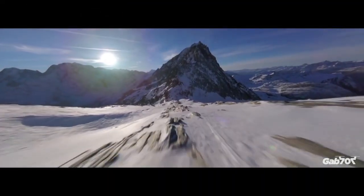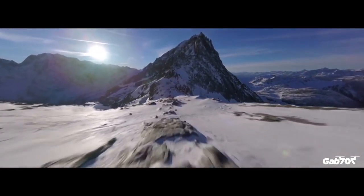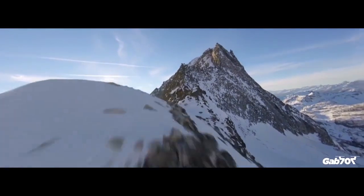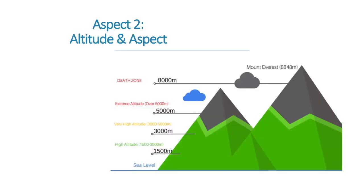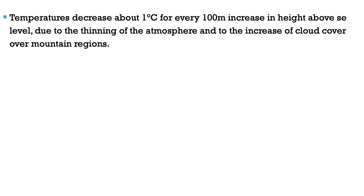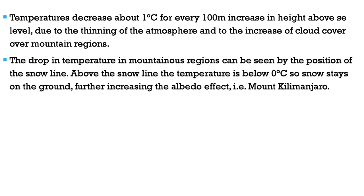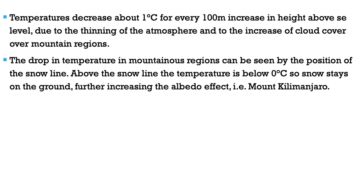The second aspect is altitude and aspect. Altitude is height above sea level, and aspect is the direction in which a slope is facing. Altitude and aspect play a major role in the uneven distribution of solar energy. With regards to altitude, temperatures decrease by about one degree Celsius for every hundred metres you go up in height, due to the thinning of the atmosphere and increased cloud cover around mountainous regions. The drop in temperatures in mountainous areas can be seen by the position of the snow line; above it, snow stays on the ground, further increasing the albedo effect, as seen in Mount Kilimanjaro.